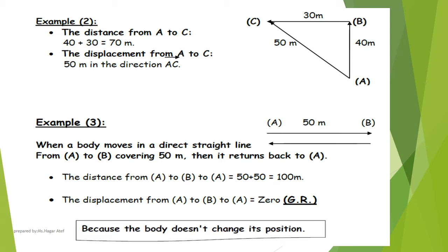Another example: When a car moves in a straight line from A to B, then it returns back to A, the distance from A to B to A equals 50 plus 50 equals 100 meters. But the displacement from A to B to A equals zero. Why? Because the body doesn't change its position.